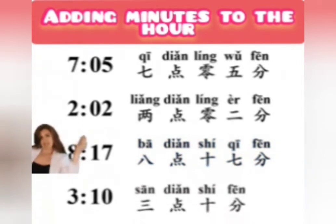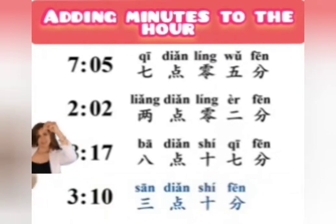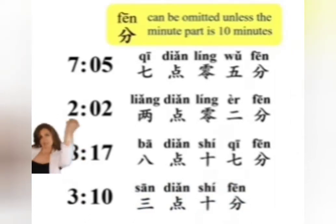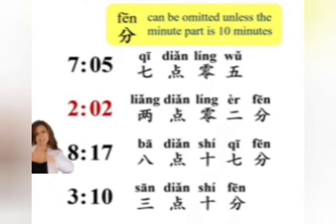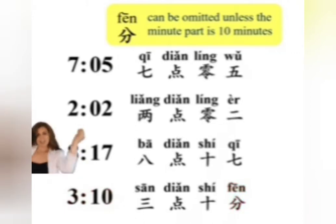3:10 is 三点十分. It's the hour part, 三点, three o'clock, followed by the minute part, 十分. When telling the time, 分 can be omitted unless the minute part is ten minutes. So for 7:05, you could omit 分 and just say 七点零五. This is also the case for 2:02 and 8:17. However, for 3:10, the minute part is ten minutes, so 分 cannot be omitted — you have to say 三点十分.